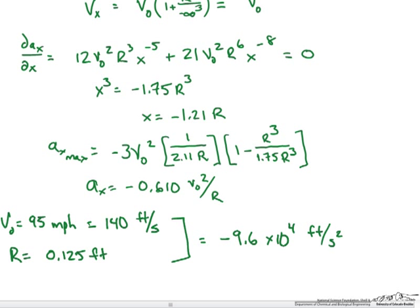I get a value of negative 9.6 times ten to the fourth feet per second squared. So you can see that this deceleration is almost 3,000 times that of gravity. And if you picked other velocities of spherical objects and their radiuses, you could calculate something very similar for the acceleration.